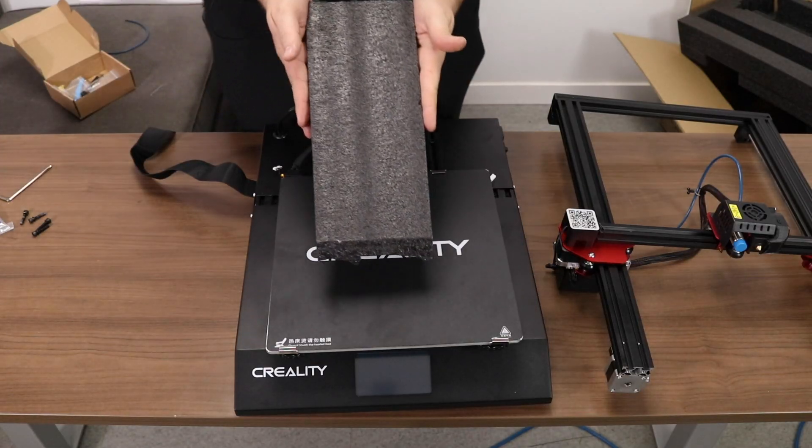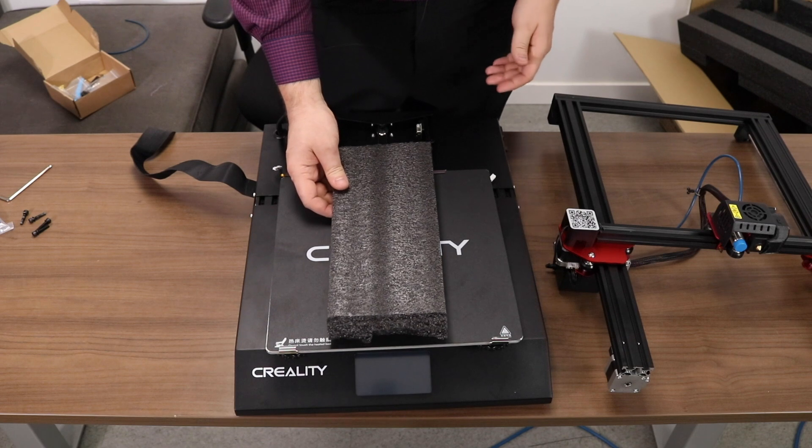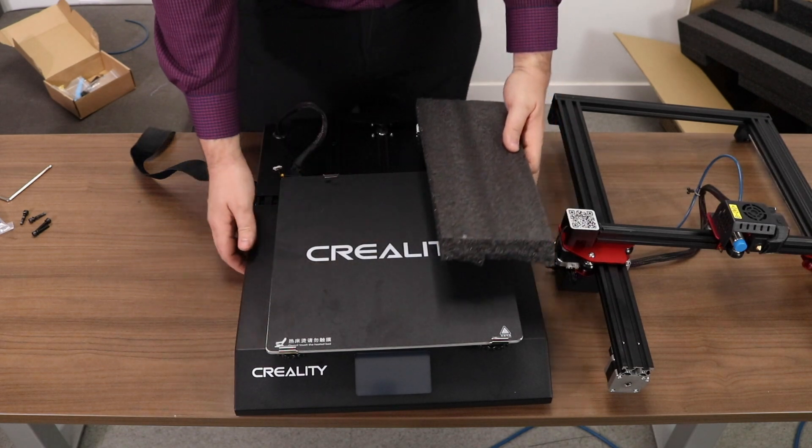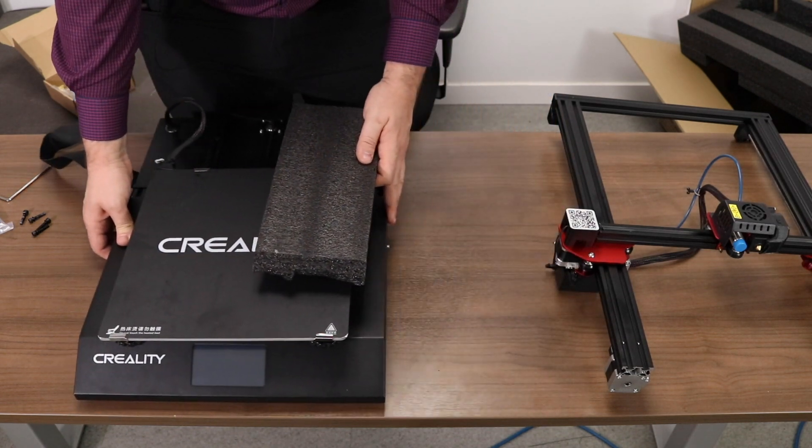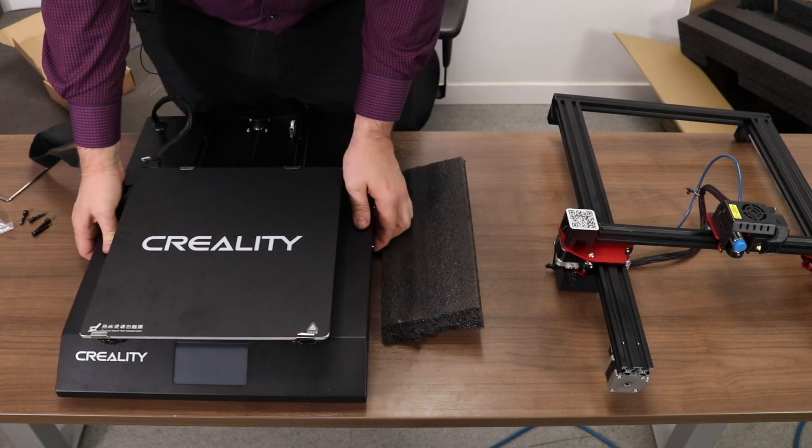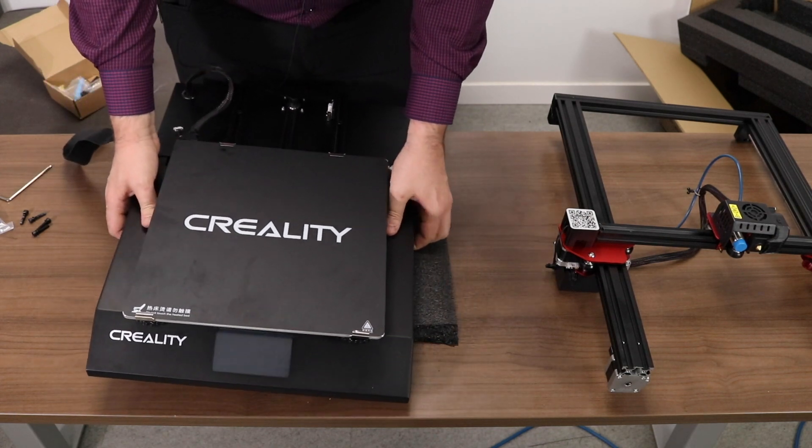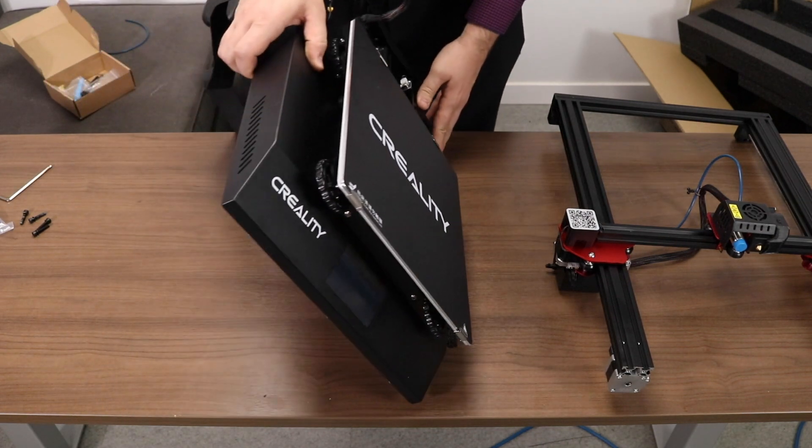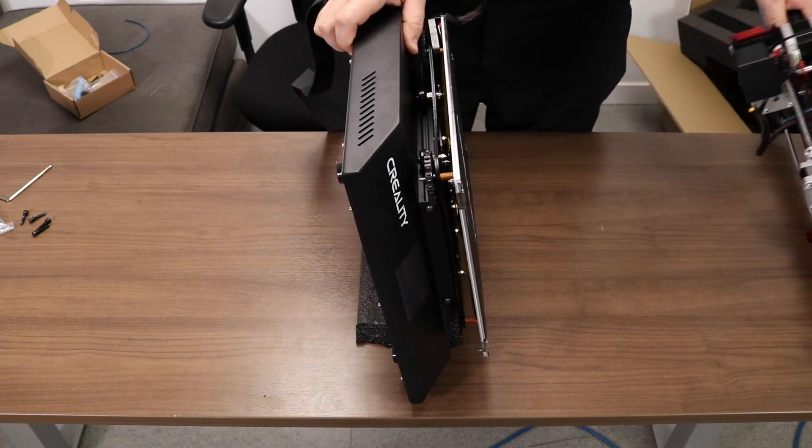The next step is to mount the Z-axis to the base. Using a piece of foam that was holding the bed in place, we're going to put it on the side and then carefully mount the printer on the foam and turn it over. Doing this will ensure that the printer will not get scratched during this process.